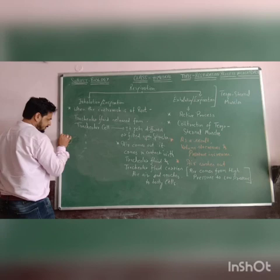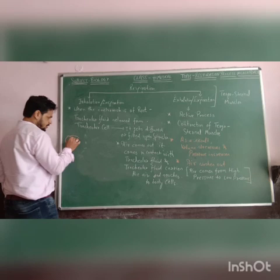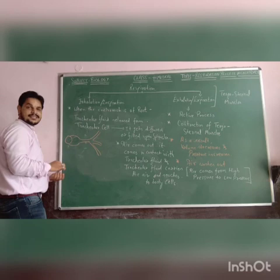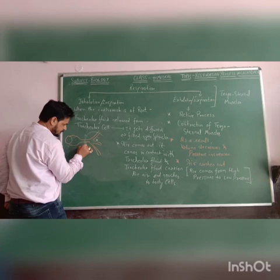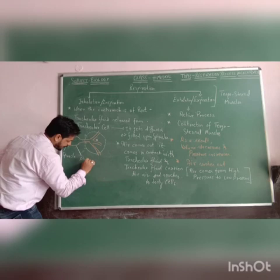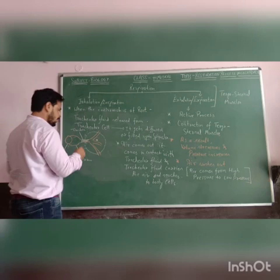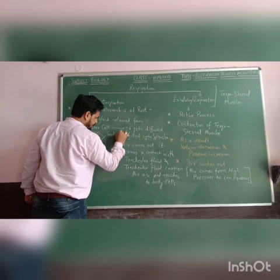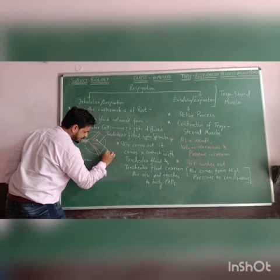The spiracles have a sac-like structure opening called the atrium. The trachea is divided into small branches known as tracheoles. The tracheal cell is present along the tracheoles, and this is the nucleus of the tracheal cell.